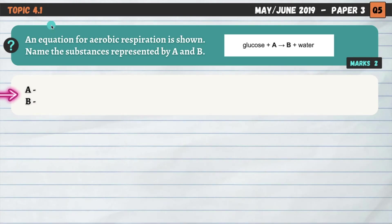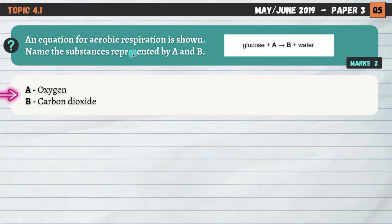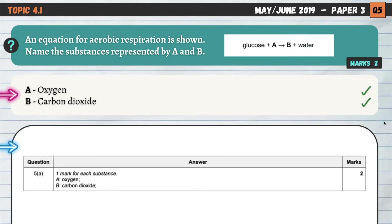Topic 4.1: an equation for aerobic respiration is shown. We need to know the equations for both types of respiration. The question asks us to name the substances represented by A and B. For aerobic respiration, glucose and oxygen combine, go through a series of chemical processes, and produce energy. Our two waste products are water and carbon dioxide — so B is carbon dioxide. The mark scheme confirms that.